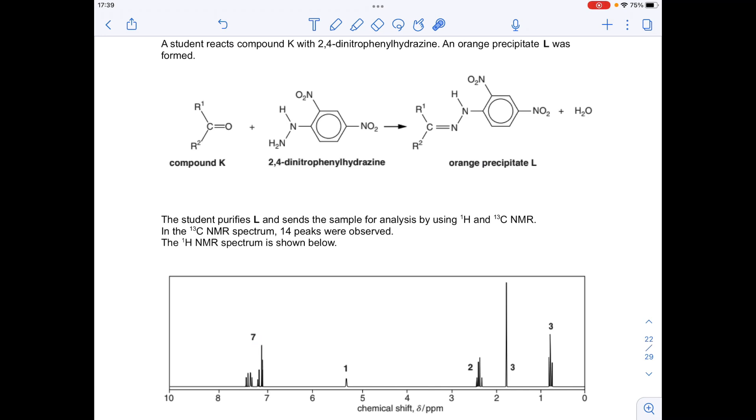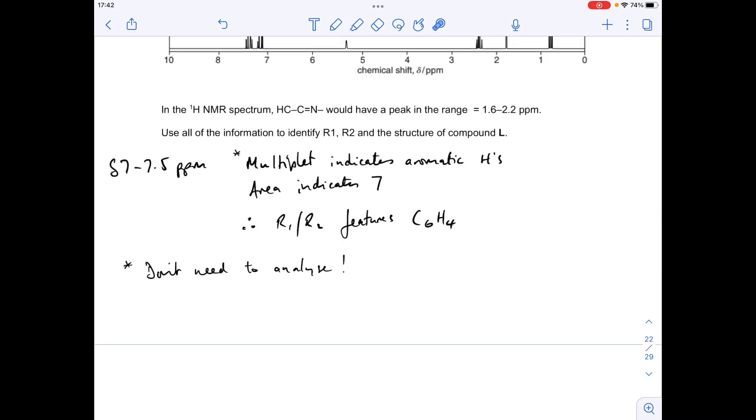And the other thing we can see from this partial structure is we've got 3 aromatic protons already featured. So what that's telling us is in one of the R groups we must have another benzene ring with 4 hydrogens on. Okay, so there's all that written up.